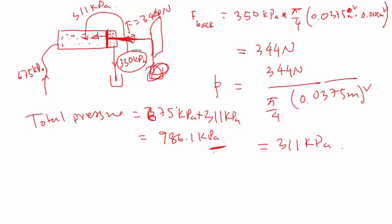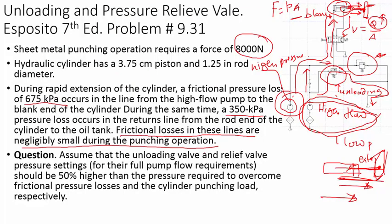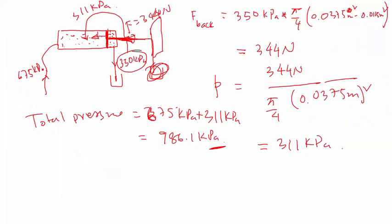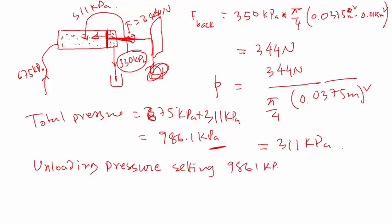To overcome the back pressure and blank-end losses, 986.1 kilopascals would be sufficient. However, to run the operation smoothly, we set the unloading valve pressure 50% higher. Therefore, the unloading valve pressure setting is 986.1 kilopascals times 1.5, which equals 1479 kilopascals.